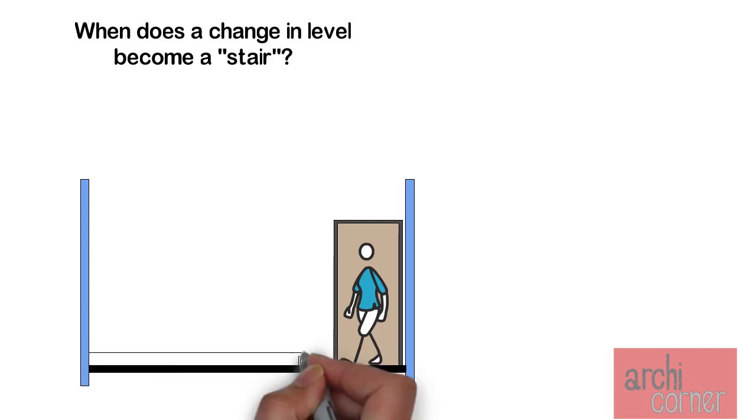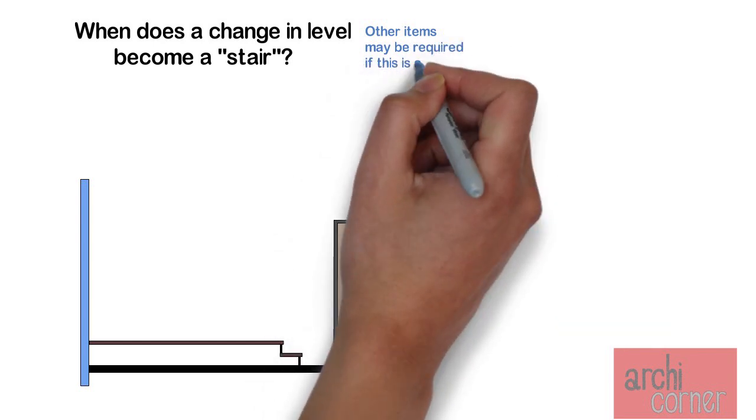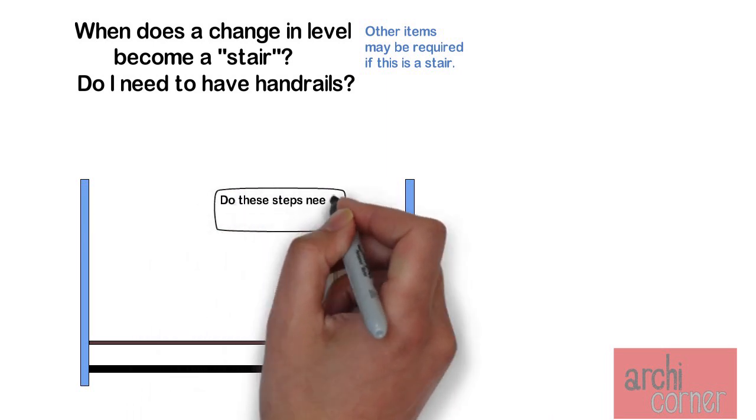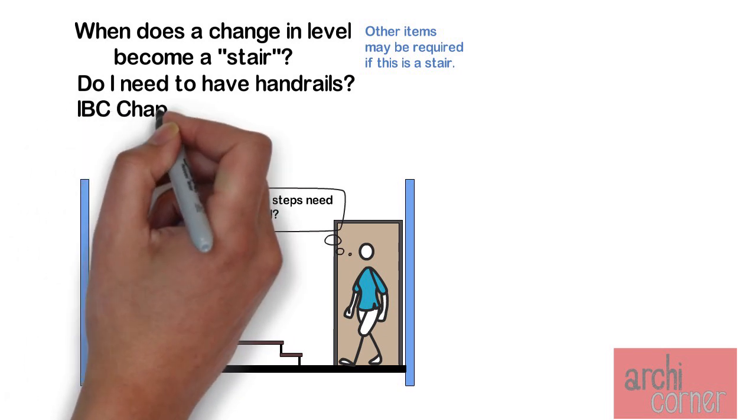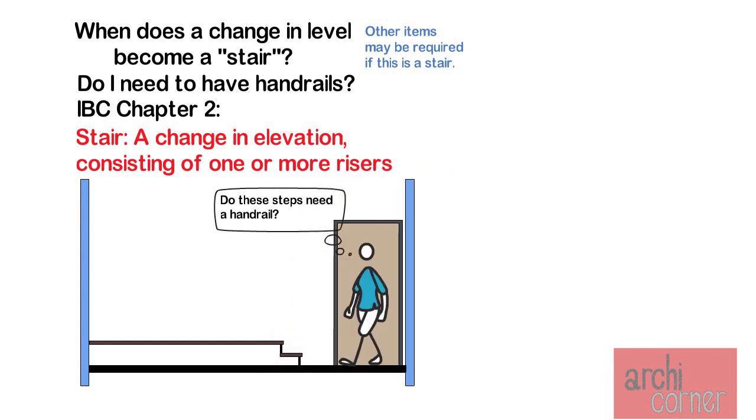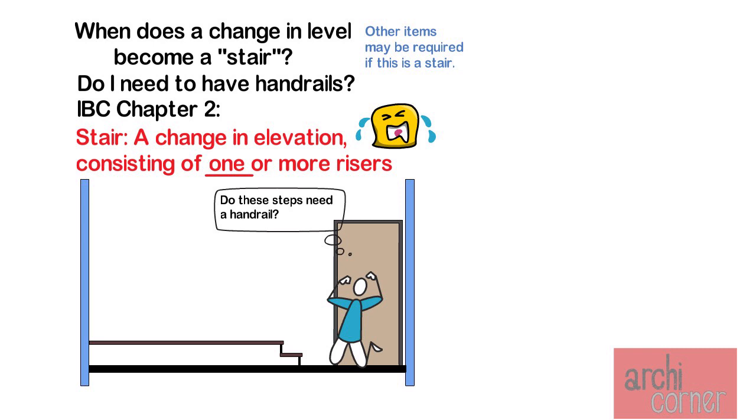Now let's address a simple but important question. When does a change in level become a stair? In other words, is it one step? Is it two steps? And why is this important? Well, let us first answer why this is important. When designing a stair, there are usually other requirements associated with stairs such as handrails. Therefore the question really is, do I need handrails if I only have one step? Is one step considered a stair and therefore that triggers the requirements in the code for stairs? The answer can be found in chapter 2 of the IBC where a stair is defined as a change in elevation consisting of one or more risers. This clearly states that as soon as you have one step or riser, then guess what? You have a stair my friend and you have to comply with all those requirements. I know, I'm sorry. Womp womp womp, cry me a river. It sucks I know, but that's just the way things are.